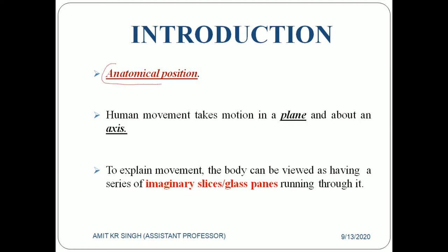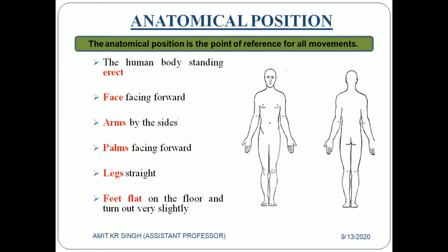In this chapter we are going to discuss: first, what is anatomical position; second, how human movement takes motion in a plane and about an axis; third, to understand about movement we can imagine the body as having a series of imaginary slices or glass panes running through it. So first of all, what is anatomical position? By definition, the anatomical position is the point of reference for all movement.